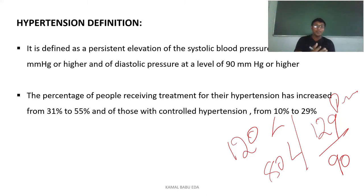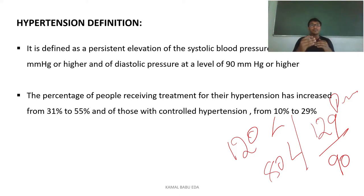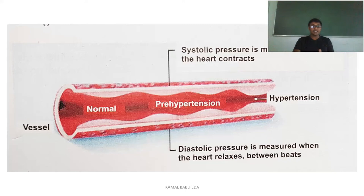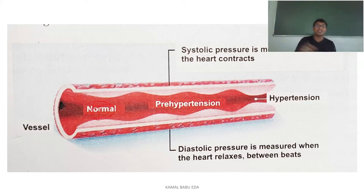Anything beyond 120/80 is termed as hypertension, and there are different types of classification based on the values obtained. If you see a normal vessel, the blood flow passes without any kind of disturbances.